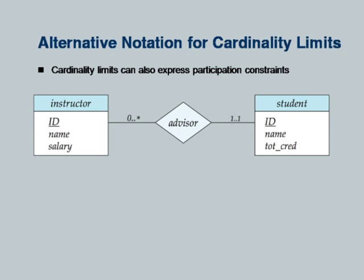This notation can also express specific upper bounds — for example, '0..20' to say an instructor can be an advisor for at most 20 students, which cannot be expressed using the arrow notation alone.